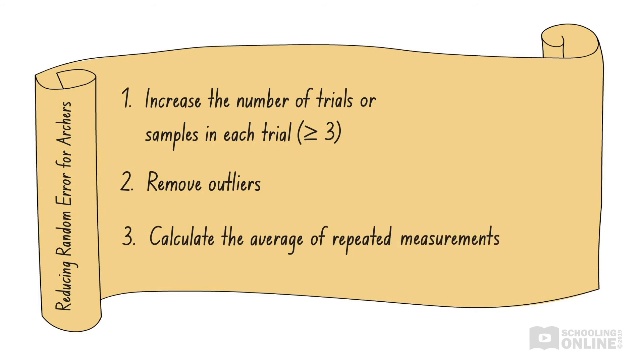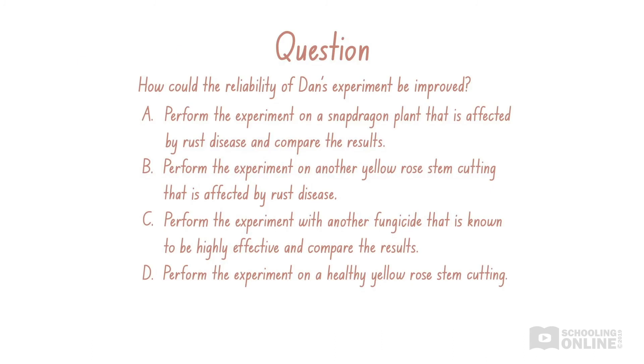Dan has only examined the effect of the fungicide on one yellow rose plant, so he cannot calculate the average number of days it took for rust disease to be cleared, or spot any outliers. That means he'll need to repeat the experiment and collect more data. In general, a good approach to multiple-choice questions is to check each of the available options and pick the best answer using the process of elimination.